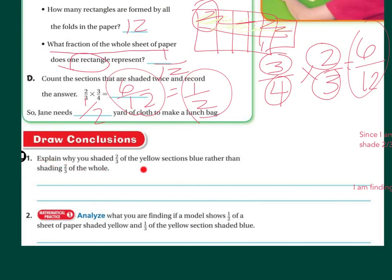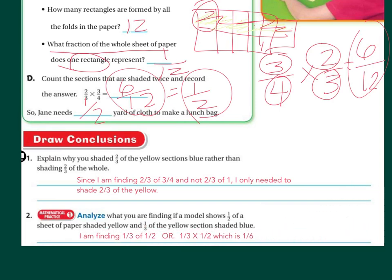Explain why you shade two-thirds of the yellow sections blue rather than shading two-thirds of the whole. Well, since I'm finding two-thirds of three-quarters and not two-thirds of one, I only need to shade two-thirds of the yellow. Let's analyze. What are you finding if the model shows one-half of a sheet of paper shaded yellow and one-third of the yellow section shaded blue? You're finding one-third of one-half, or one-third times one-half, which is one-sixth.